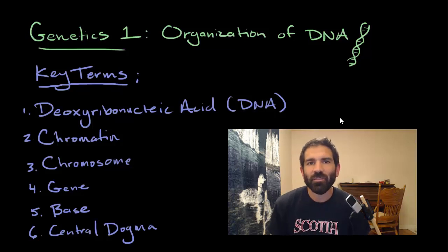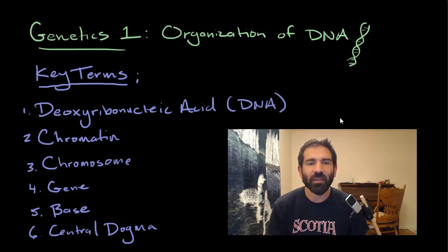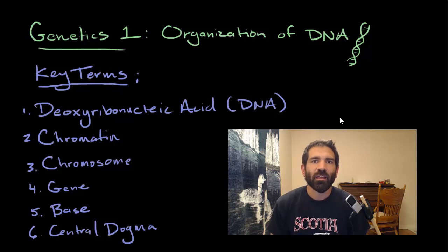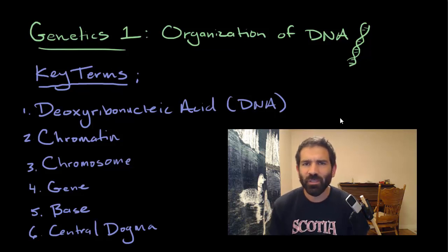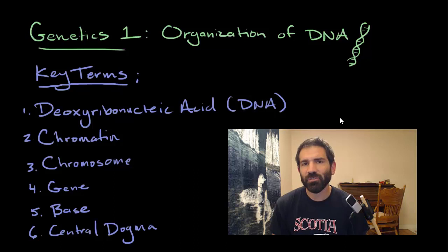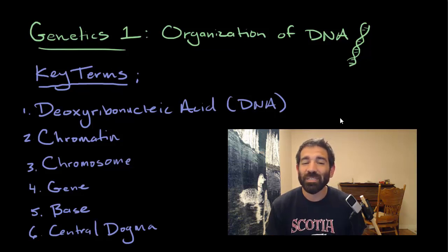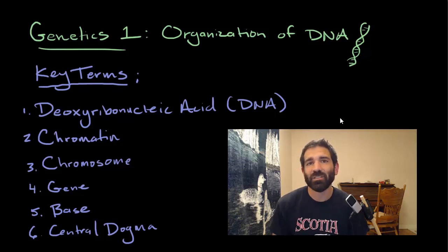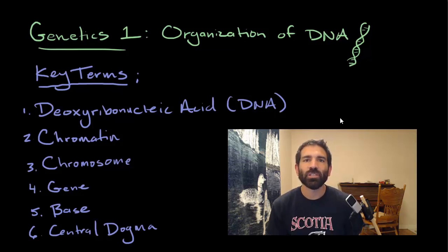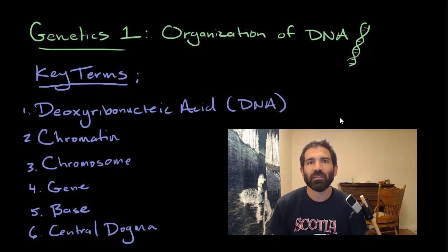Hi, this is Mr. Judd and this is Genetics One: the organization of DNA. We're just going to get our feet wet today with a little bit of genetics, talking about DNA and where it's found. The key terms for today are deoxyribonucleic acid, also known as DNA, chromatin, chromosomes, gene, base, and the central dogma.